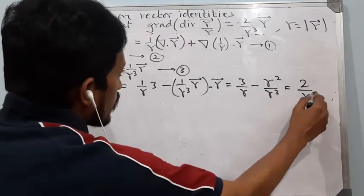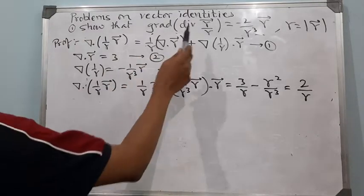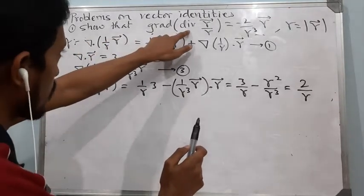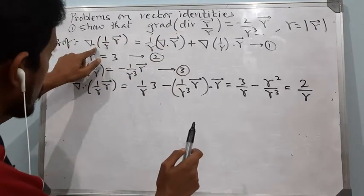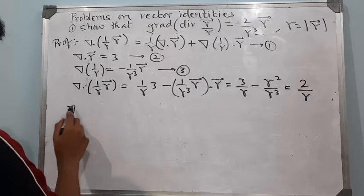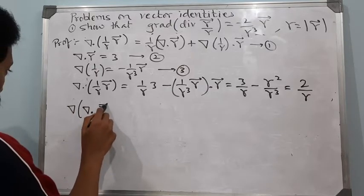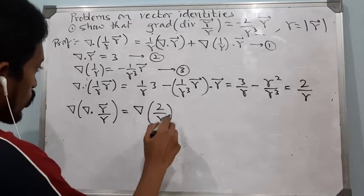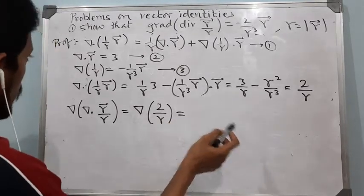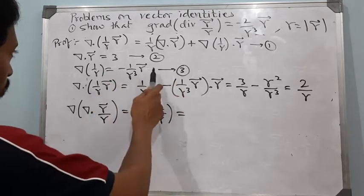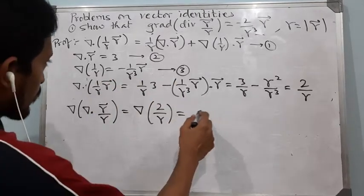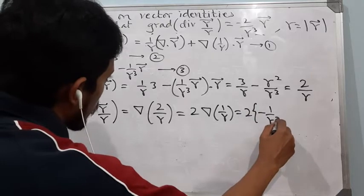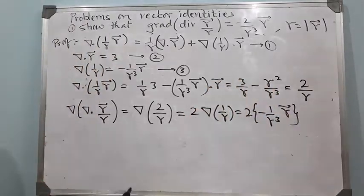That gives us 2/r. Now we need to find gradient of divergence of vector r/r. We have found the inner bracket, that is divergence of (1/r · r) = 2/r. So gradient of divergence of (r/r) equals gradient of 2/r. We have found that gradient of 1/r is minus 1/r³ times r, so this gives minus 2/r³ times vector r, which is the required result.